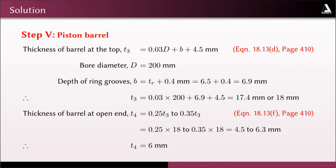In step five, we determine piston barrel dimensions. Maximum barrel thickness T3 (eq. 18.13d, page 410): T3 = 0.03D + b + 4.5 mm, where D = 200 mm and b = Tr + 0.4 = 6.9 mm (depth of ring grooves). So T3 = 17.4 mm, taken as 18 mm. Minimum barrel thickness at the open end T4 (eq. 18.13f, page 410) should be between 0.25T3 and 0.35T3 = 4.5 to 6.3 mm; we take T4 = 6 mm.